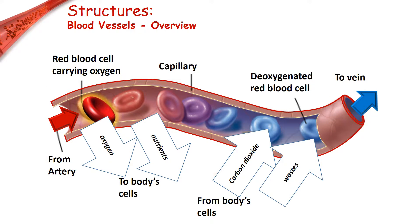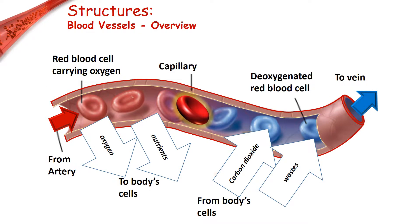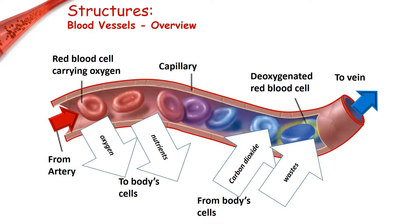In both systemic and pulmonary circulation, blood vessels are the essential pipelines through which red blood cells transport oxygen, carbon dioxide, nutrients, hormones, and waste products to and from body tissues.